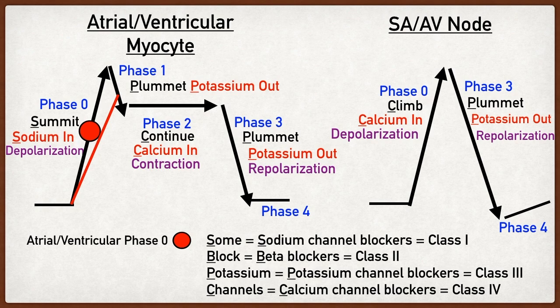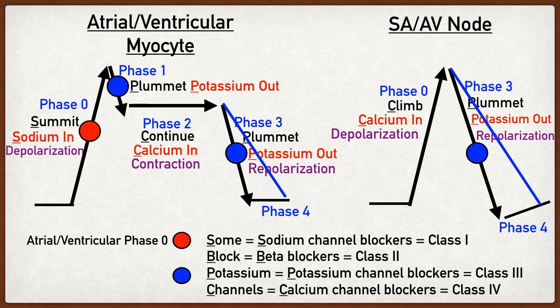Potassium channel blockers are class three. Potassium channels were involved in phase three of both the non-pacemaker myocytes and the pacemaker myocytes. Phase three is involved in repolarization — this is when potassium ion channels open, leading to an efflux of potassium out of the cell, making the cell more negative and leading to repolarization. If we block those potassium ion channels, potassium has a harder time exiting the cell, prolonging the repolarization phase of both non-pacemaker and pacemaker cells. This decreases the excitability of the non-pacemaker cardiac myocytes and decreases conduction velocity of the pacemaker cells.